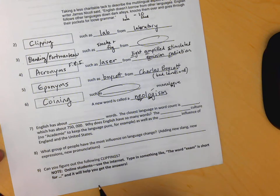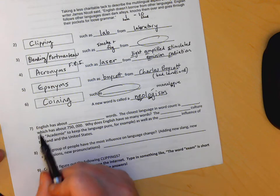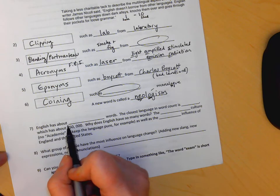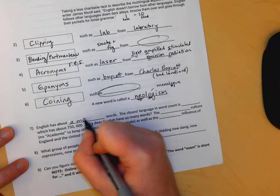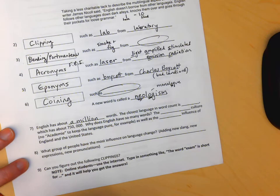Answers to these questions go like this. Number seven, English has about a million words. That's way more than any other language.